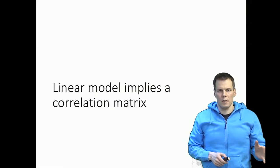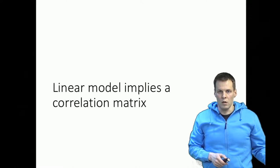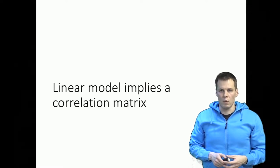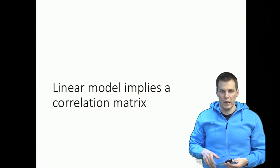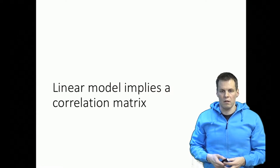A linear model is any model where all the relationships are linear — for example, a regression model. A correlation matrix quantifies the linear associations between each pair of variables at a time on a standardized metric.